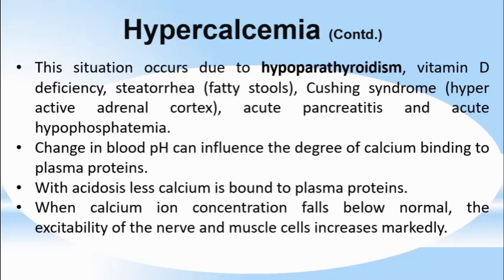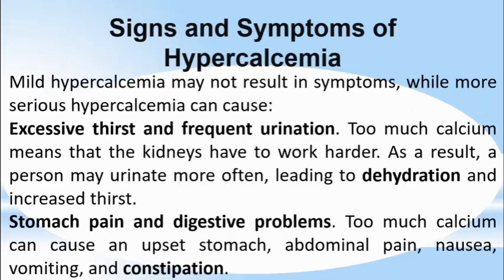Changes in blood pH can influence the degree of calcium binding to plasma proteins. With acidosis, less calcium is bound to plasma proteins. When calcium ion concentration falls below normal, the excitability of nerve and muscle cells increases markedly. Symptoms of hypercalcemia include excessive thirst and frequent urination — too much calcium means the kidneys have to work harder, leading a person to urinate more often and resulting in dehydration and increased thirst.